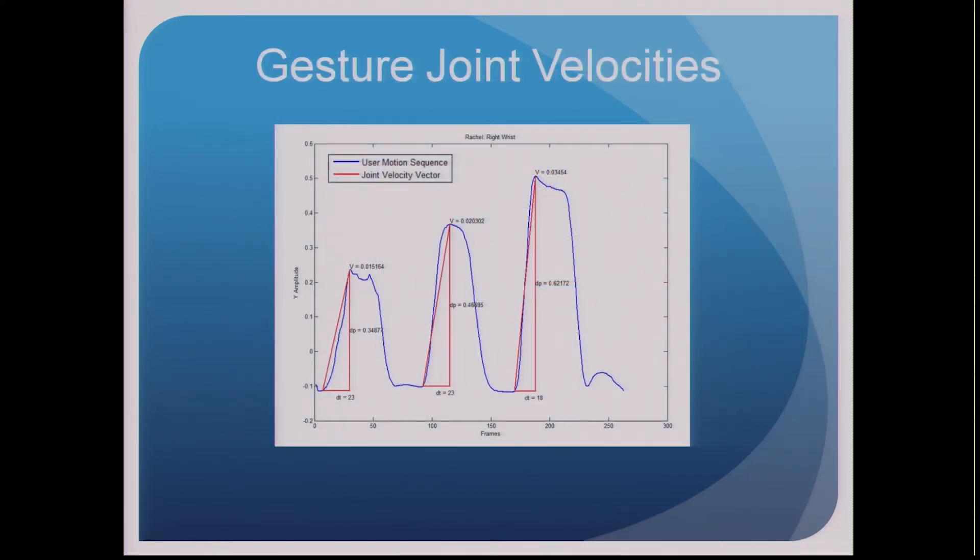So if you look on this screen, the plot in blue is the user's right wrist y-amplitude over time, and the red lines represent the velocity vectors.